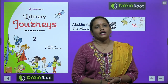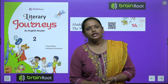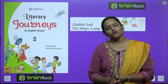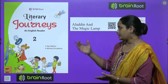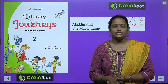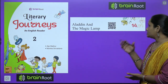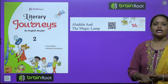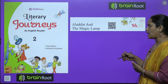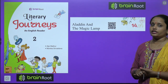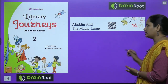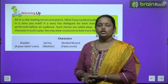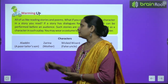Hello kids, welcome back. I am Vandana and we are learning English reader of class 2 by Brain Root series, and here is a book called Literary Journeys. Today we are going to start chapter number 14, and the name is Aladdin and the Magic Lamp. So yes, we are going to learn about Aladdin and some magic in this chapter. Let's start with the warming up.